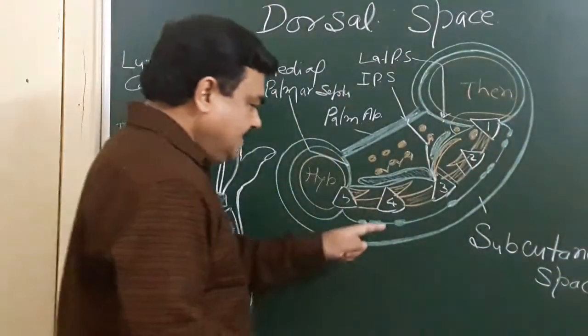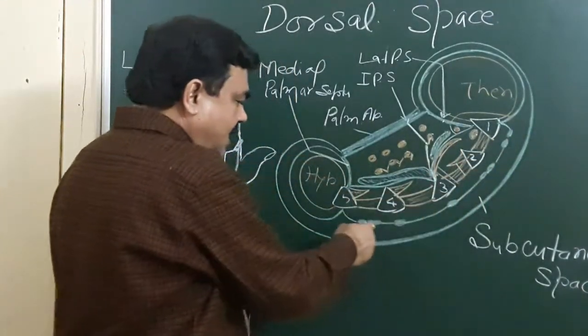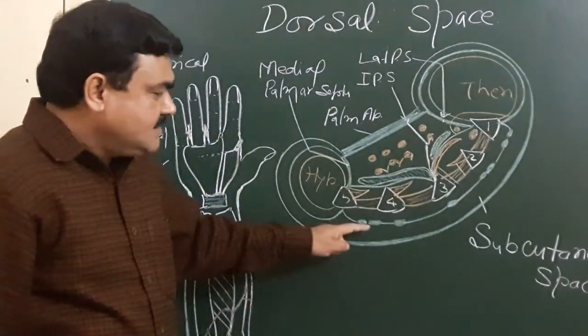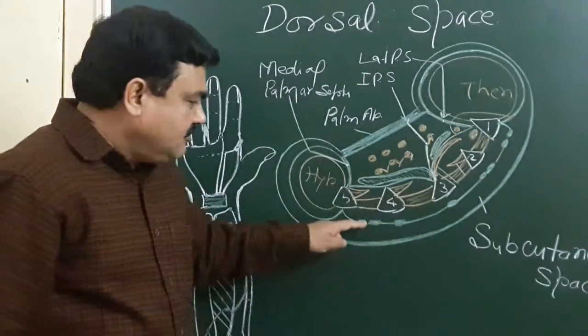Another space is here. You can see these are numerous tendons of the extensor compartment. These tendons become flattened, aponeurotic, and joined with each other.